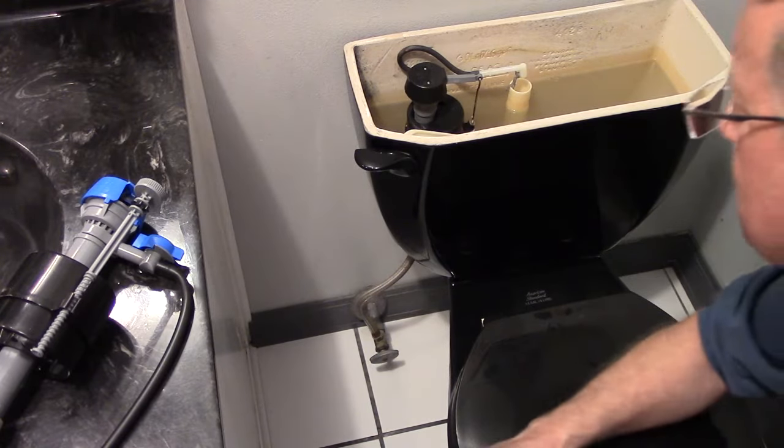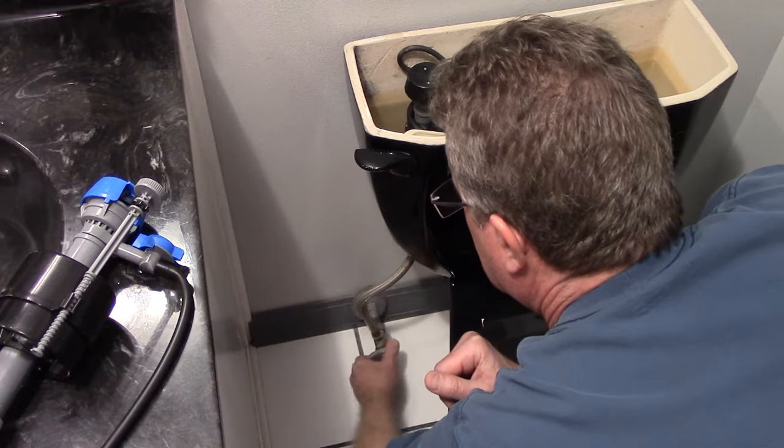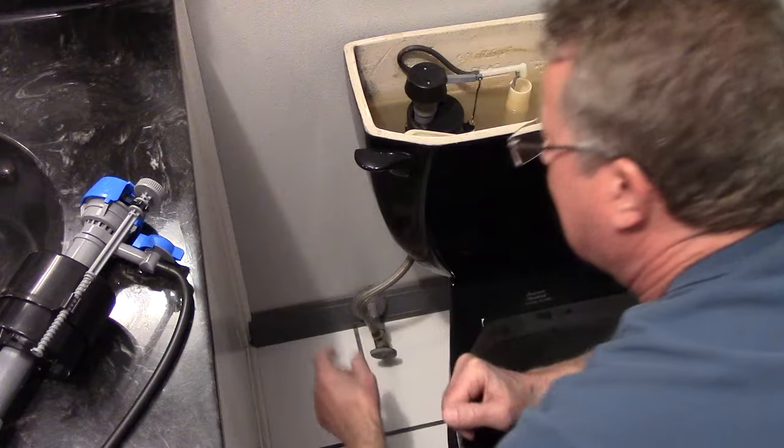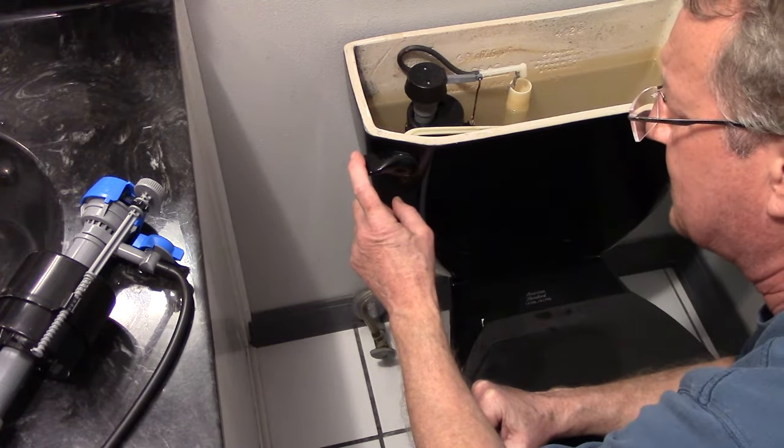Turn off the water going to the toilet. You're going to turn the handle on the shut-off valve clockwise. And now flush the toilet. Hold down the handle so you get as much water out of the tank as possible.